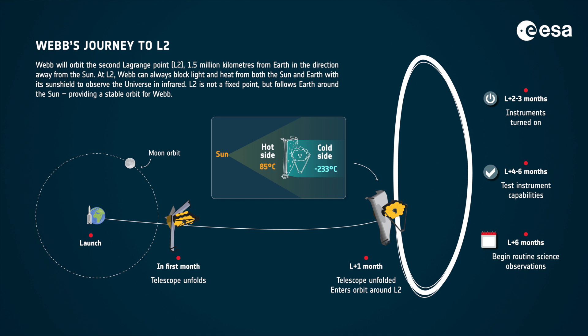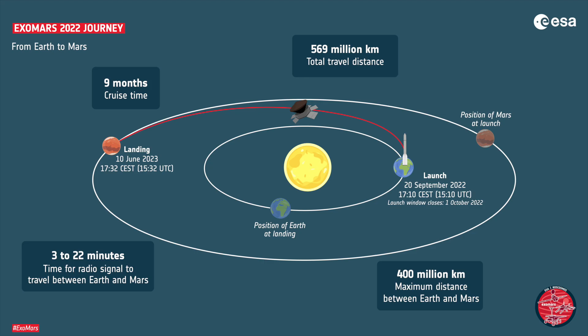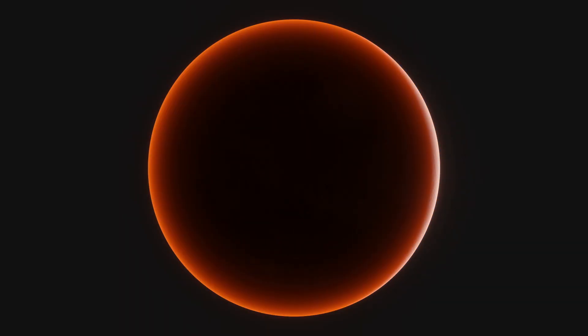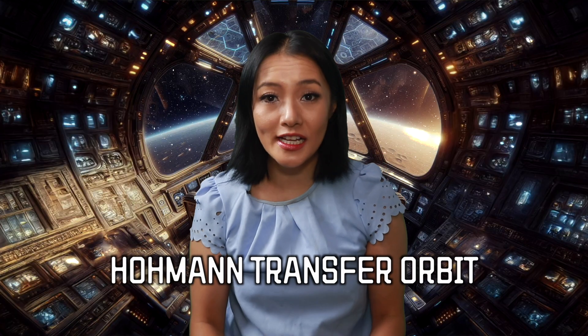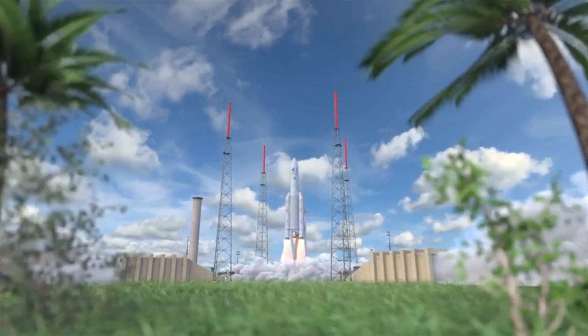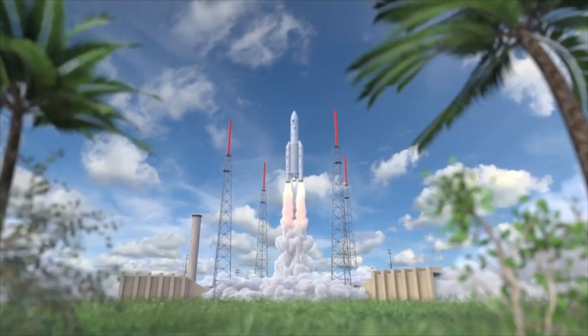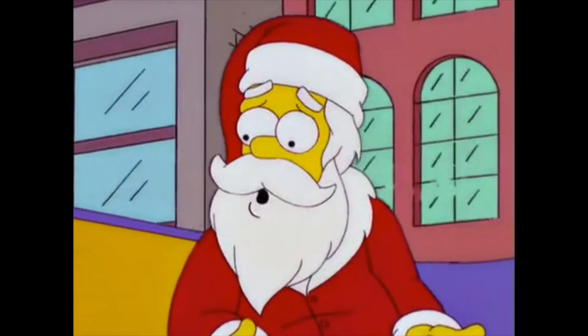If you want to go to Mars, or anywhere outside of our little bubble here, you may be thinking: why do we always take these super weird routes? Why not go directly there? There are many ways to get to Mars, but the one you're probably most familiar with is the Hohmann Transfer Orbit. In terms of fuel consumption, this is the most efficient way to transfer between two orbits — and this is particularly important because currently it costs a few thousand dollars to send just one kilogram to space.